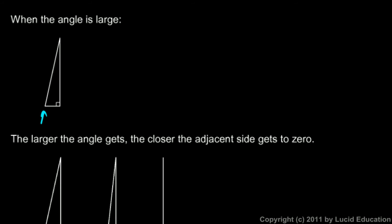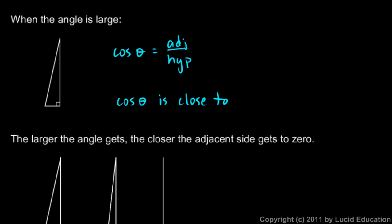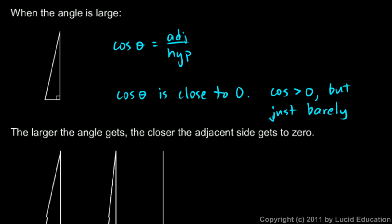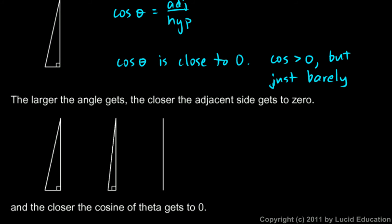Now think about a large angle. This is my theta, and cosine of theta is still the adjacent side divided by the hypotenuse. In this case the adjacent side is very short compared to the hypotenuse, so for a large angle the adjacent side gets really small. The cosine of theta is still greater than 0, but just barely — cosine of theta is close to 0.